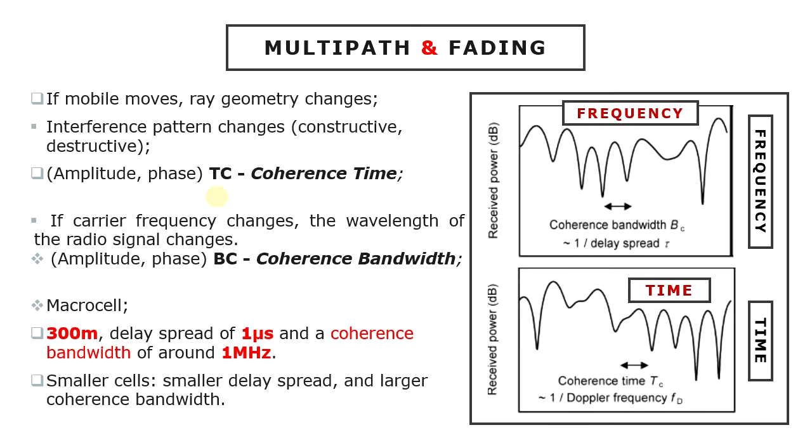If the carrier frequency changes, then the wavelength of the radio signal changes too. This also makes the interference pattern change between constructive and destructive. So fading is a function of frequency as well. The amplitude and phase of the received signal vary over the frequency scale called the coherence bandwidth.